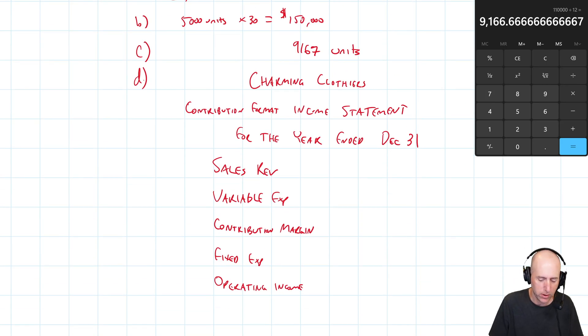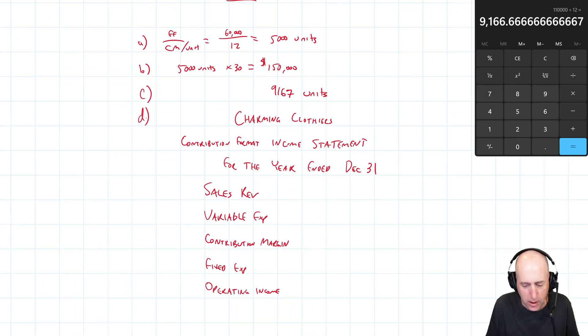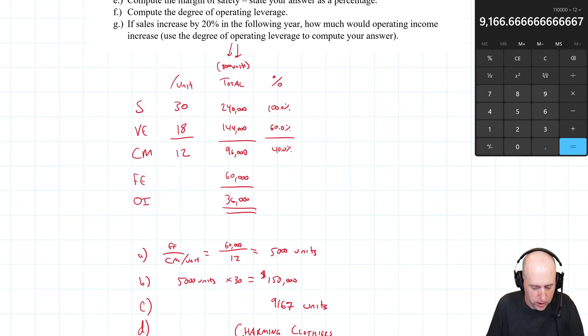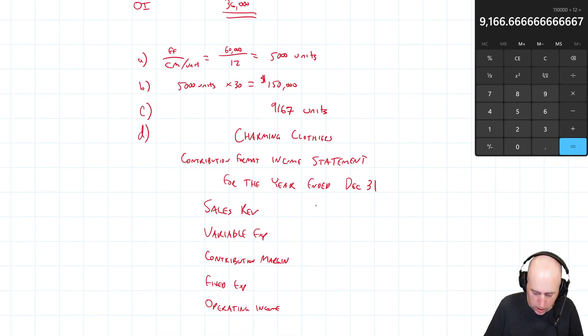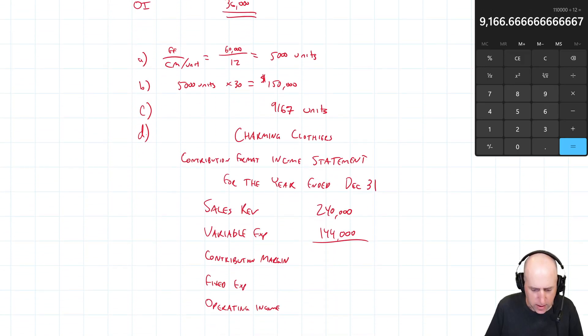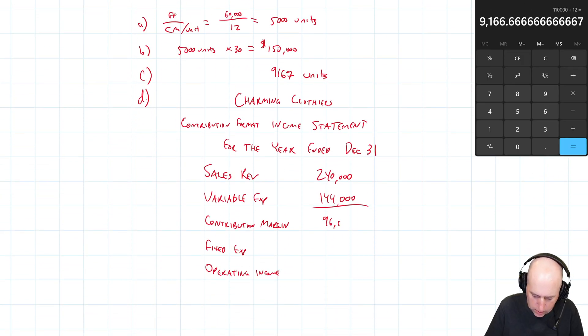Now if we had taxes, we would go minus income tax equals net income, but we just stop there. So our sales, well we have it all here, it's all these numbers. $240,000 for sales, $144,000 for variable expenses, $96,000 for contribution margin, $60,000 for fixed expenses, and $36,000 for our operating income.